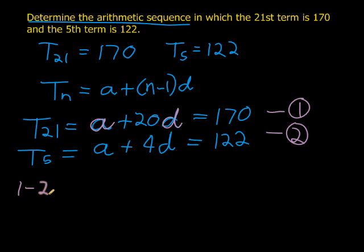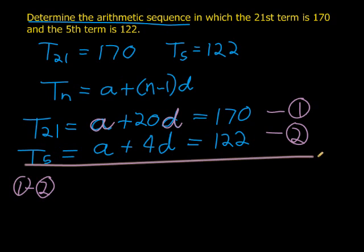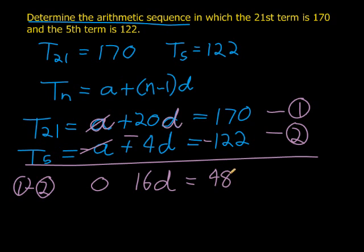And we can simply say, well, let's take the first equation minus the second equation. Let's subtract the two. When I do so, I see I eliminate one of them. So when subtracting this, all these signs change. So a minus a will give me 0. 20 minus 4 gives me 16d is equal to 170 minus 122 gives me 48. So I see solving for d, I get d is equal to 3.